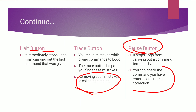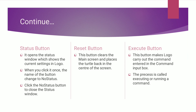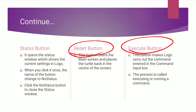Whenever you want to continue after pausing, use the Continue button. The Status button opens the status window which shows the current settings in Logo. When you click it once, the button name changes to No Status — click No Status to close the status window. The Reset button clears the main screen and places the turtle back in the center of the screen. The Execute button helps you execute the command you have typed in the command input box.